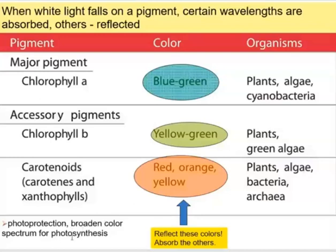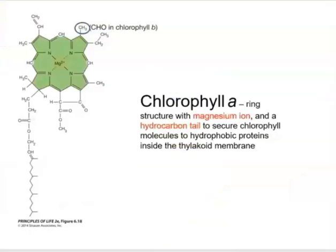What does chlorophyll a look like chemically? It has a ring structure with a magnesium ion in the center and a hydrophobic hydrocarbon tail. That tail is perfect for being embedded in a thylakoid membrane — these molecules serve like little antennas to capture sunlight.